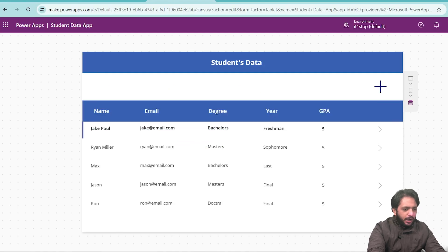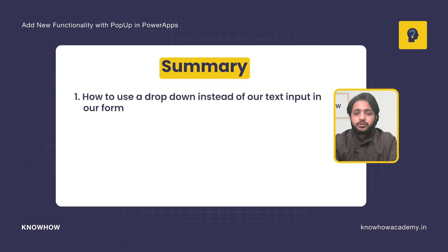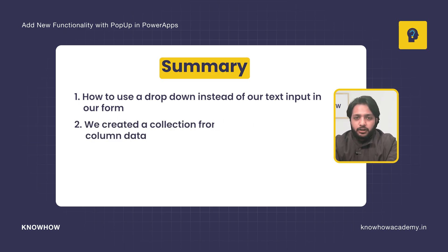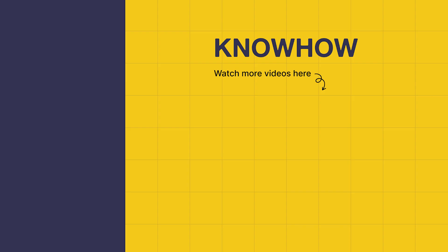This is how you can implement add new in your Power Apps. In this video, we learned how to use a drop-down instead of a text input in our form, created a collection from our SharePoint list column data, and created a pop-up to implement the add new functionality. Thank you for choosing KnowHow Academy as your IT source. We are always there to help you navigate the tech world. Stay curious and keep learning.